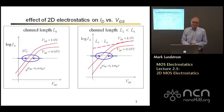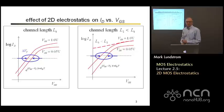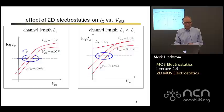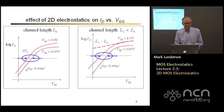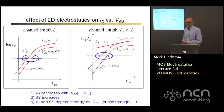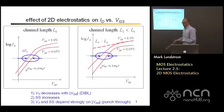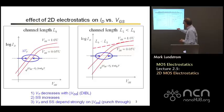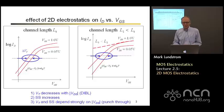If I were to consider a channel length that's even shorter, I might see something like this. This is a device that has a terrible sub-threshold swing and enormously high on-current. In fact, a device like this is difficult even to turn off. This would be a device that we would say is punched through. So what we see here is that the threshold voltage decreases with drain voltage — that's what we call drain induced barrier lowering. The sub-threshold slope can degrade, and if we have severe two dimensional electrostatic effects, the device can be punched through.